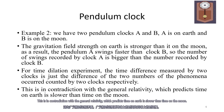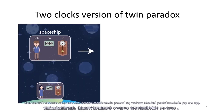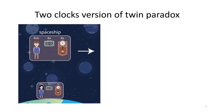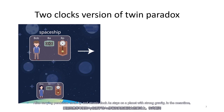This result is in contradiction with general relativity, which predicts time at stronger gravity is slower. So consider the twin paradox: Alice and Bob are twins. They have two identical atomic clocks AA and AB, and two identical pendulum clocks AP and BP. Alice, carrying pendulum clock AP and atomic clock AA, stays on a planet with strong gravity.